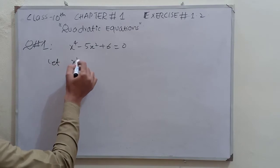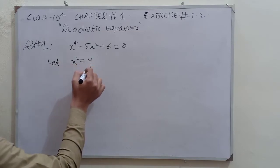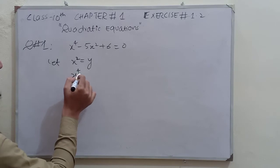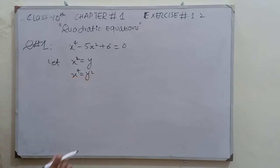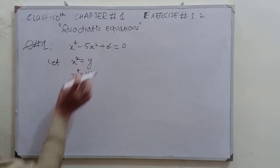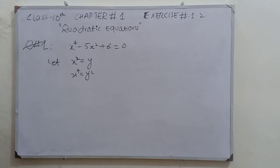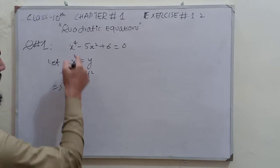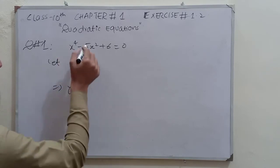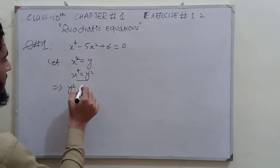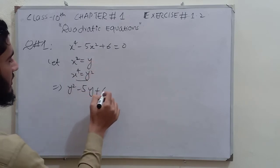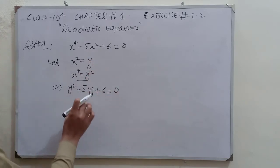Let x² equal y. Then x⁴ equals y². So if we put these two values into the given equation, it reduces to: y² minus 5y plus 6 is equal to 0.